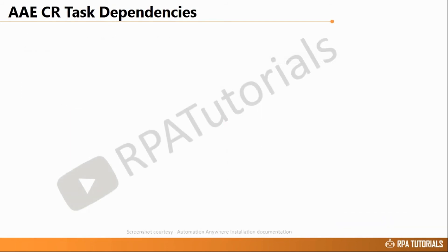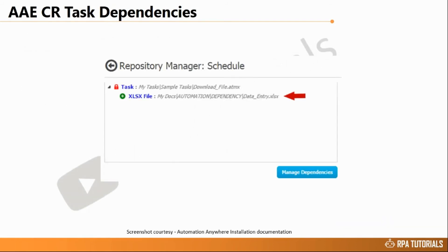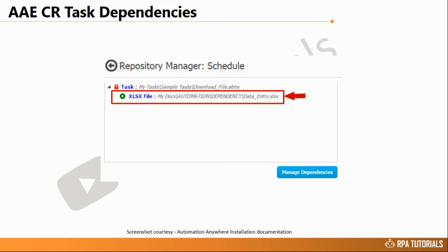Added dependencies appear in the View Dependencies section. These dependencies, which are added from the server repository, are downloaded on the bot runner machines at the time of execution and live on during the time the bot is running.